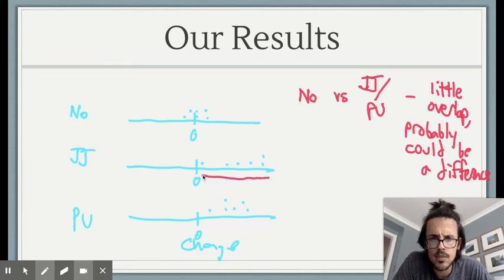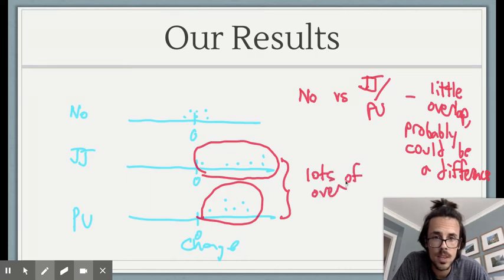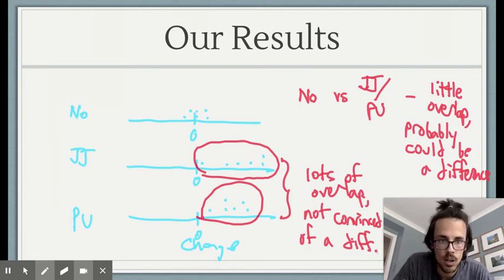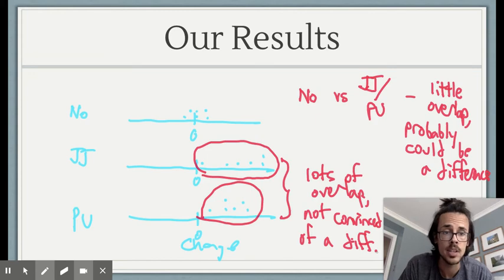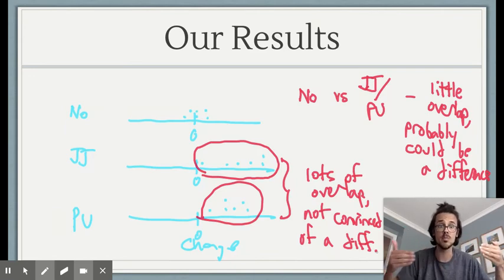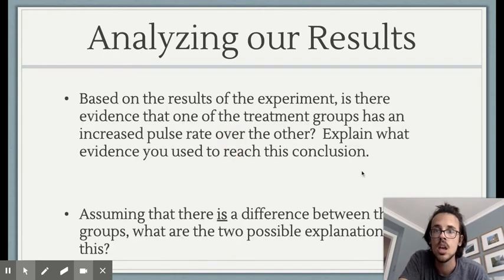If you look at jumping jacks versus the push-ups group, they have a lot of overlap - yes, some people in the jumping jacks group are higher, but there's an awful lot of overlap. When there's lots of overlap, we're not convinced of a difference. That is what you want to look for in a nutshell: is there lots of overlap or not? We will talk a lot this year about deciding whether results are statistically significant. This is our introductory chapter, just dipping our toes in the water - we will revisit this many times in AP Stats.